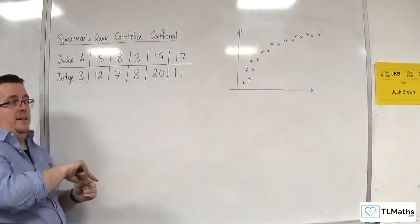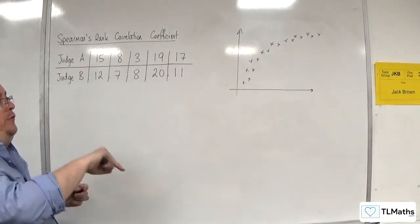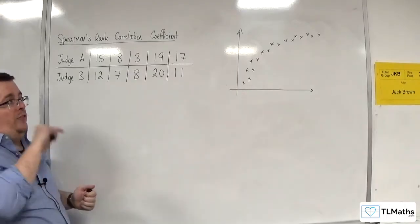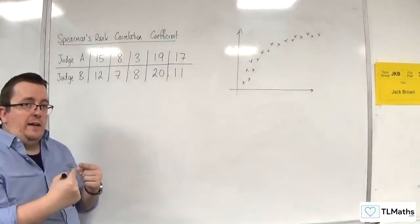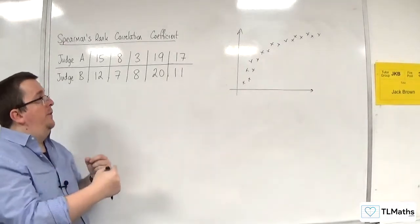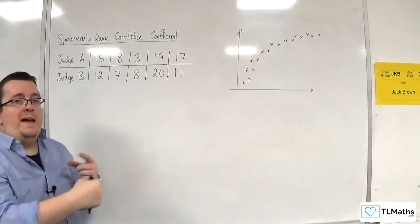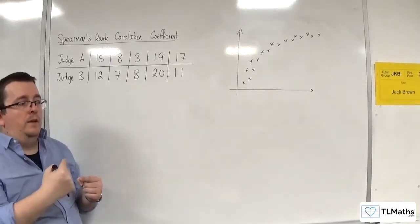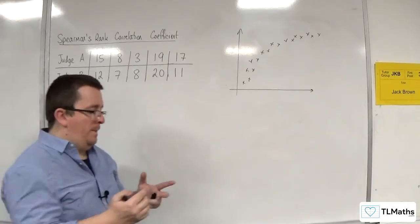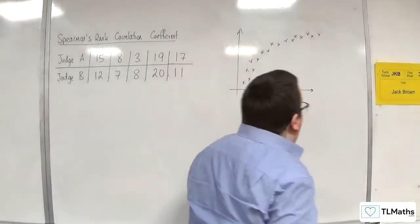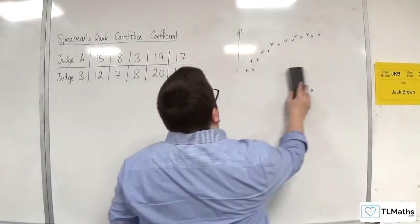Well, Spearman's rank can deal with that, because what Spearman's rank correlation coefficient does is that word there, rank. It ranks the data, so it puts it in order of size. And instead of comparing that raw data that the PMCC does, Spearman's actually looks and compares the ranks that are given. So compares what is first, what is second, what is third. So how do we actually do it?